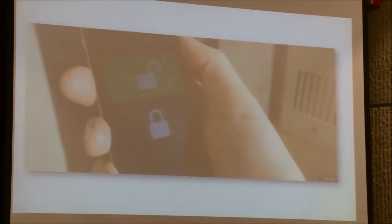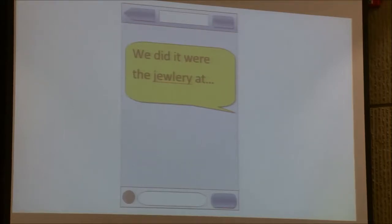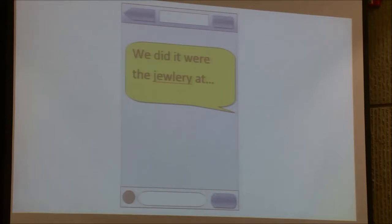They looked at the phone, which was not password protected or encrypted in any other way. They manipulated the keyboard in the usual old-fashioned way to look at recent text and email communications, as well as photographs. They found one draft text message — there were a few spelling mistakes, but the basic translation, as the police perceived it, was: we did it. In other words, we committed the robbery, and now we want to know where the jewelry is — suggesting that there may be an accomplice out there and that the jewelry was in danger of being disposed of.